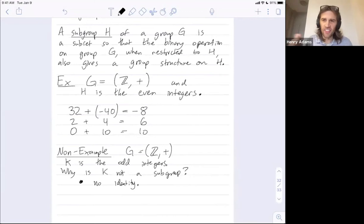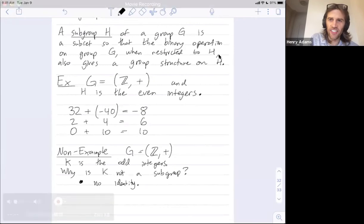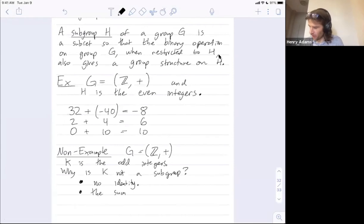There's no odd number such that when you add it to any other odd numbers, you get that original odd number back, right? When you add by an odd number, you always change something. What are other reasons the odd numbers are not a subgroup? Yeah, completely. When you add two odd numbers, you don't get another odd number. You get an even number. So the sum of two odd numbers is not odd. It's even.